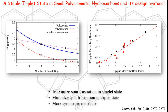Keeping in mind the high computational cost of multireference methods, we alternatively propose a model Heisenberg Hamiltonian, which can capture the qualitatively correct trend of the ST gap. This is also justified with the figure on the right side. Our proposed design principle to achieve a lower ST gap is to maximize spin frustration in the singlet state, minimize it in the triplet state, and use a more symmetric molecule.